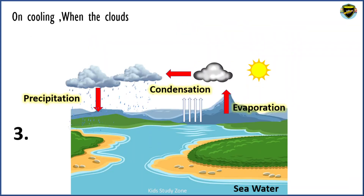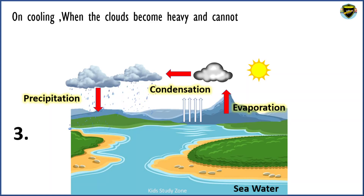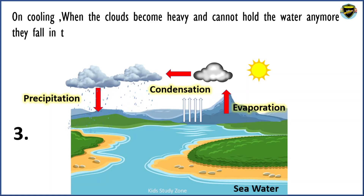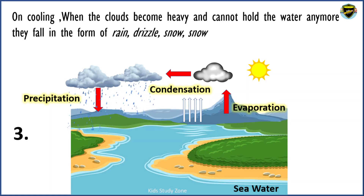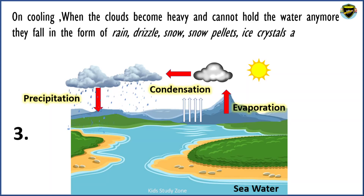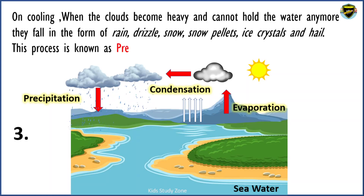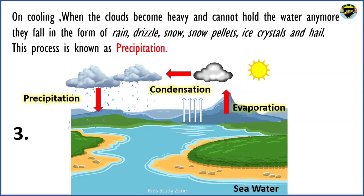On cooling, when the clouds become heavy and cannot hold the water anymore, they fall in the form of rain, drizzle, snow, snow pellets, ice crystals and hail. This process is known as precipitation.